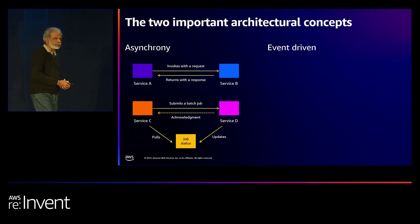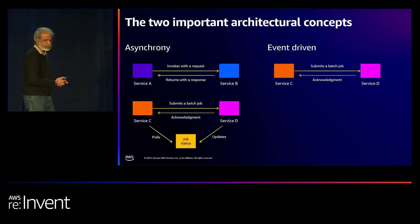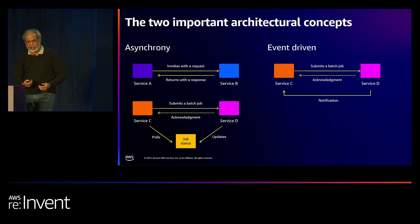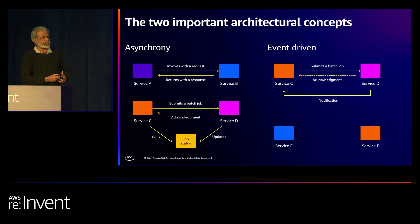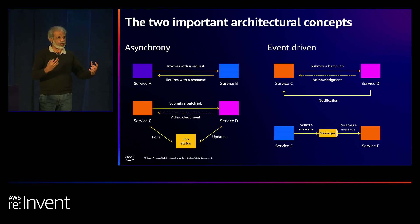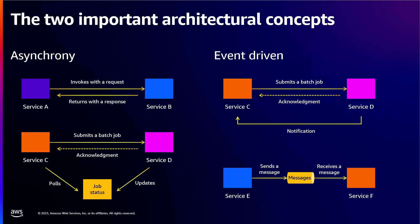Let's take one step further. What if, instead of Service C asking for status, Service D pushes the status to Service C as events? We're getting into event-driven territory. Rather than waiting, every payment capture goes out as an event, and Service C can react and perform the order shipment. It's also common that services push messages onto queues for other services to consume. The point is you start to see the loose coupling — decoupling — of these microservices.